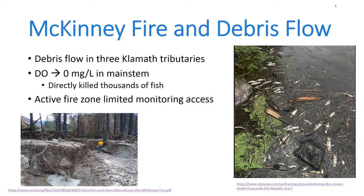That rain event on the fire area caused a debris flow in three different tributaries to the Klamath, bringing in a tremendous amount of sediment. That sediment oxygen demand drove dissolved oxygen down to zero in the mainstem river — which I didn't think was even possible — and it killed thousands and thousands of fish. Crews were not able to get into the fire zone because of road closures, so this is largely an estimate. It was considered that it was mostly suckers or warm water species, because the mainstem river is too hot during summer for salmonids — they seek refuge in tributaries. Because we couldn't get in there to measure and monitor and count fish, we were making a lot of guesses.